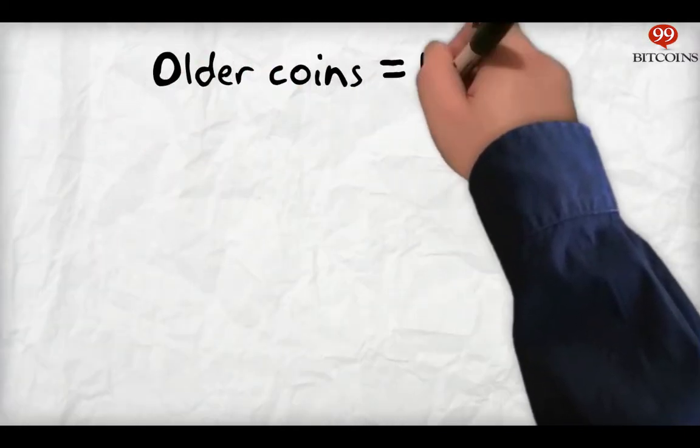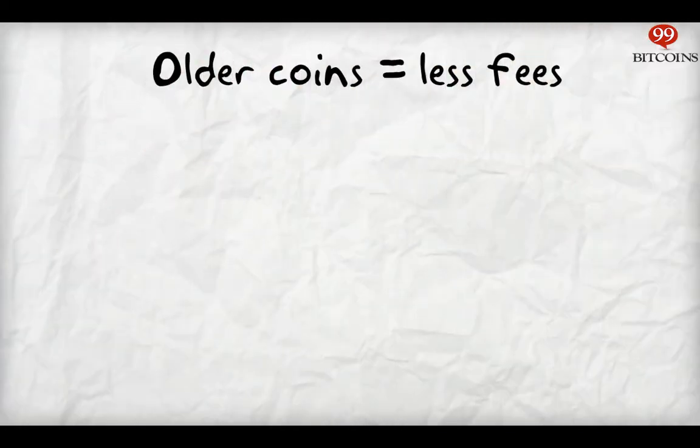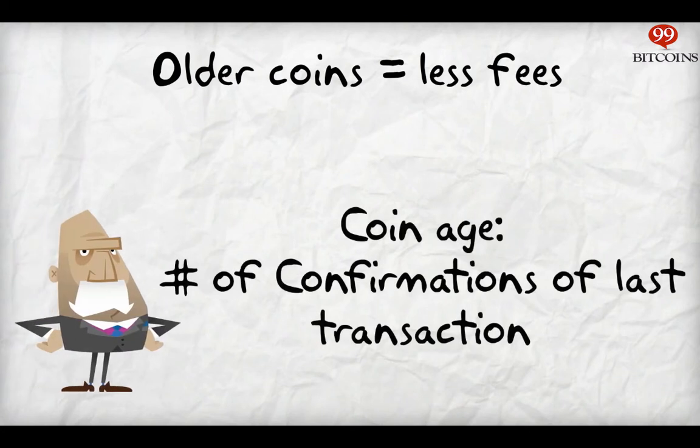Rule number two: older coins have less fees. If the inputs you are sending in a transaction are older, then there's a greater chance they won't require a fee. Old coins mean coins that haven't been moved for a long time.